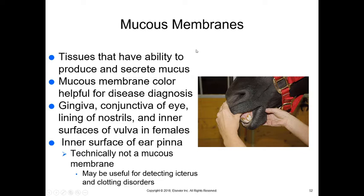Evaluating the mucous membranes is also important. These can be the gum tissue, vulvar tissue, penile tissue/prepuce, conjunctiva of the eye, or lining of the nostrils. They can help with diagnosis of disease. Make sure they are secreting mucus — not dry and tacky — but nice and moist. We want a CRT value of less than two seconds. Icterus is a yellowing of the gingival tissue or mucous membrane tissue, visible also on the inner surface of the ear, and indicates liver disease or a clotting disorder. Petechiae — tiny pinpoint bruising — also indicates a clotting disorder.